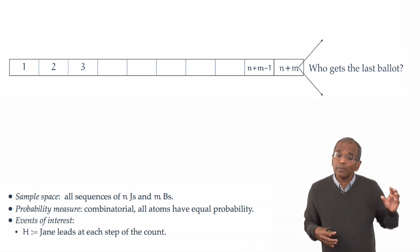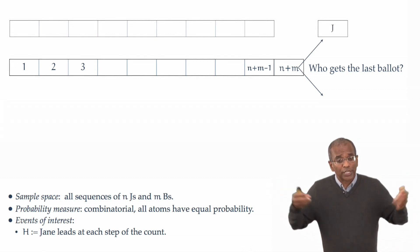But the last ballot seems to be relatively unconstrained. Who does it go to? Well, there are two possibilities. It could go to Jane, or it could go to Bob.